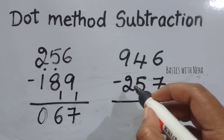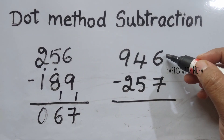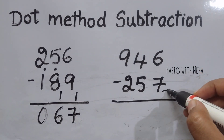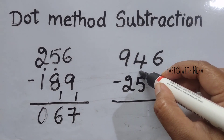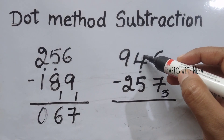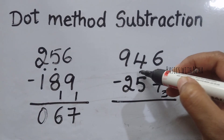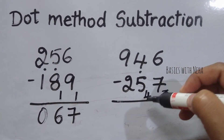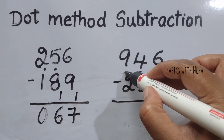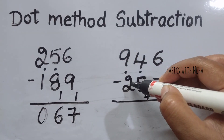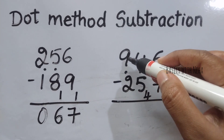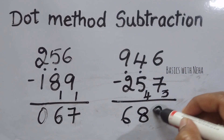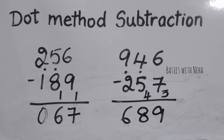Let's try 946 minus 257. Again, the minuend is smaller than the subtraction, so I'm going to take the complement of 7 on base 10, which will be 3. Since I've taken the complement, I'm going to put a dot. Again when I check, the minuend is smaller than the subtraction, so I'll not consider this dot but rather take the complement of 5 on base 9, which will be 4. Again since I've used the complement, I'm going to put a dot. This dot will be considered because the minuend is larger than the subtraction: 2 plus 1 will give me 3, 9 minus 3 will give me 6, 4 plus 4 gives me 8, 6 plus 3 will give me 9.